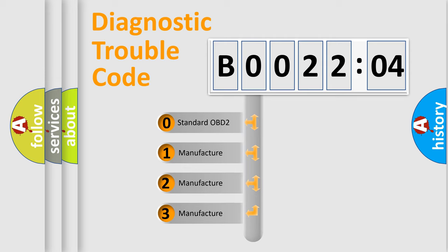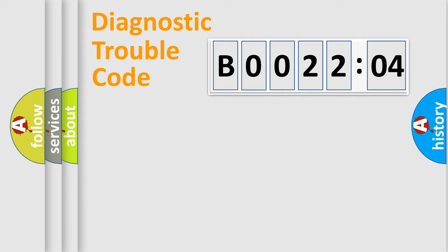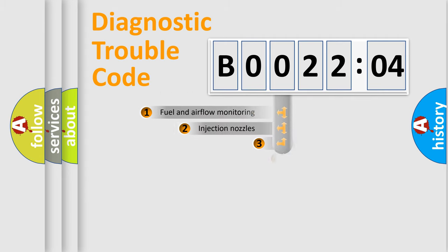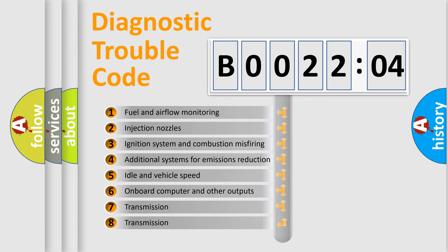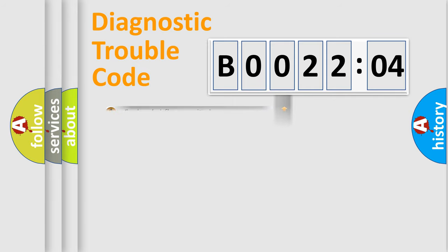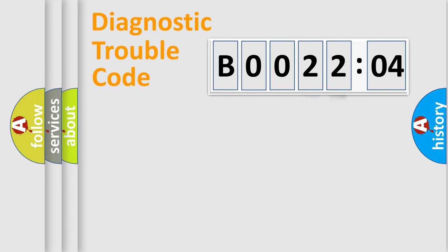If the second character is expressed as zero, it is a standardized error. In the case of numbers 1, 2, or 3, it is a more specific expression of a car-specific error. The third character specifies a subset of errors. This distribution is valid only for the standardized DTC code. Only the last two characters define the specific fault of the group.